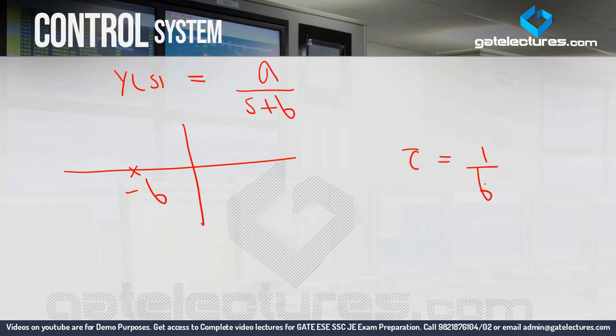So this is the benefit: if the Laplace transform is given, we can directly calculate the time constant without needing to do the inverse Laplace. That saves us time. So I have shown you how to calculate time constant both when a time-domain equation is given and when a Laplace equation is given.